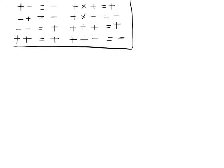We're going to have a go at the first one: evaluate P plus Q, when P is equal to 9 and Q is equal to minus 4. This is substitution still, so we're going to substitute in — P we know is 9, plus Q. Now Q is negative 4. I'm going to write this negative a little bit higher so you know that it means negative 4 and not take away. It's a negative — it's a symbol showing where this is on the number line.